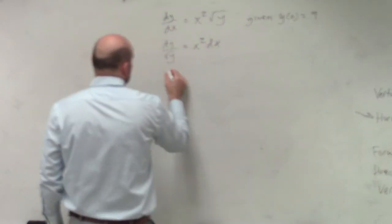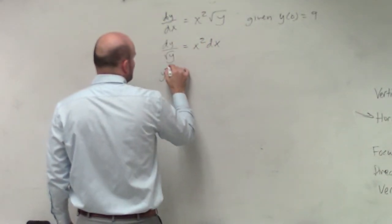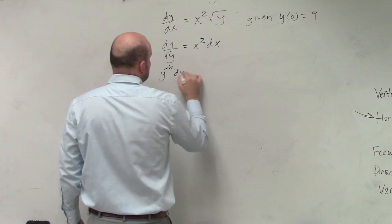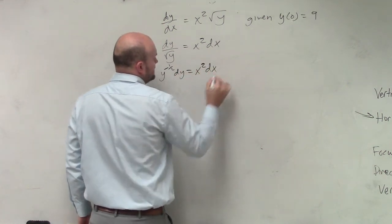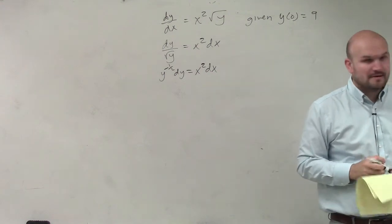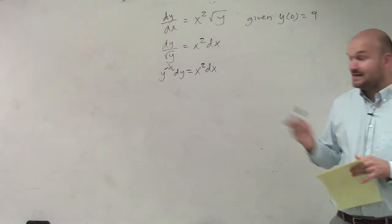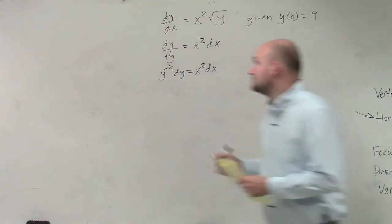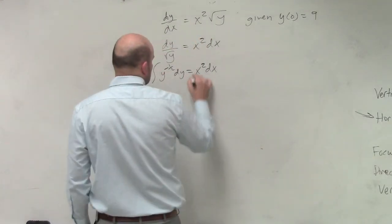And I can go ahead and simplify this a little bit more. Y to the negative 1 half dy equals x squared dx. Makes me feel a little bit better when it's not a radical. So now I can simply go ahead and integrate both sides. Integrate, integrate.